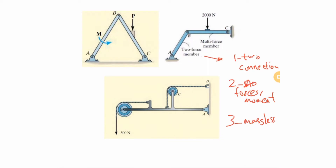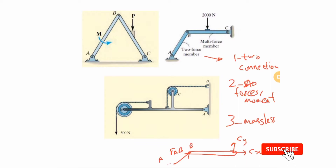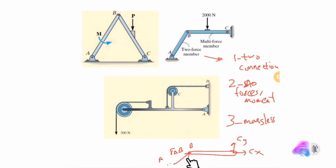Let's do the free body diagram of a structure knowing that this is a two-force member. I have a link here, a pin at C giving Cy and Cx, and because B is a joint connected to a two-force member, I can put force F_AB there — directed along the line from A to B. The only unknown is the magnitude, giving me three unknowns total, which I can solve with three equilibrium equations.